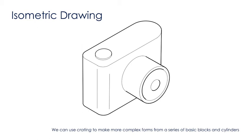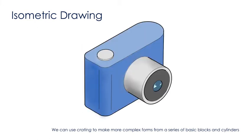We can then finish off our isometric camera by adding some shade. So, by using the crating method, which is a series of blocks added together, we can create more complex shapes using isometric drawing.